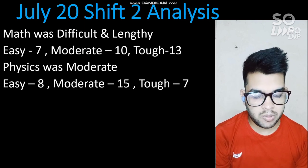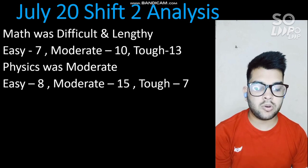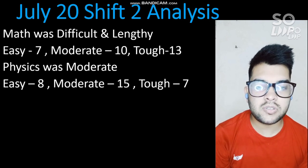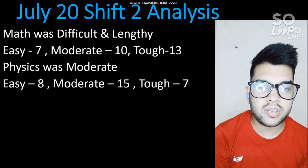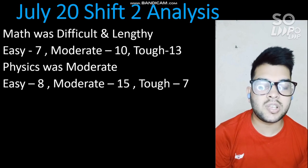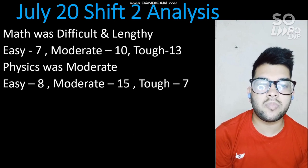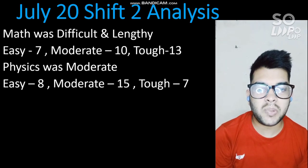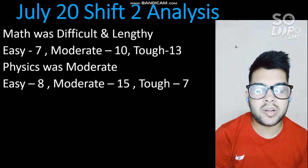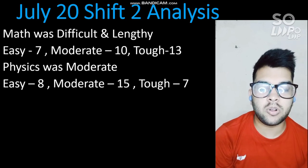Chemistry was the easiest among all subjects, as expected, and similar to the first shift. The breakdown was: 10 easy questions, 13 moderate, and 7 tough questions.